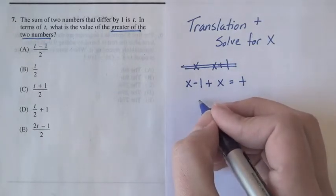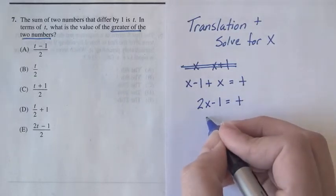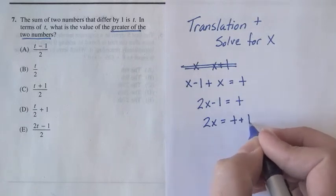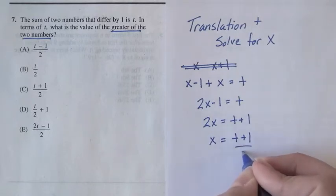Okay, so we get two x minus one on this side is equal to t. We'll add one to both sides, two x is equal to t plus one, and we'll divide both sides by two. x is equal to t plus one over two.